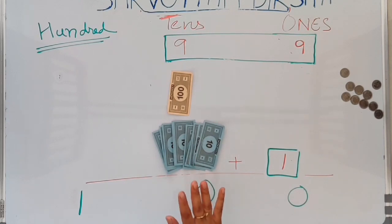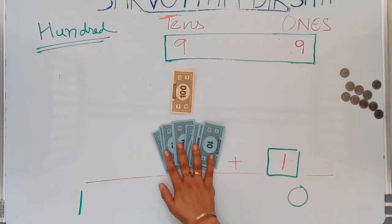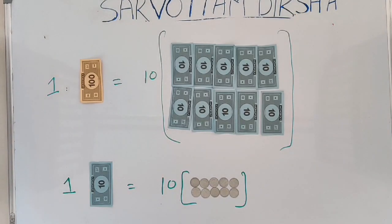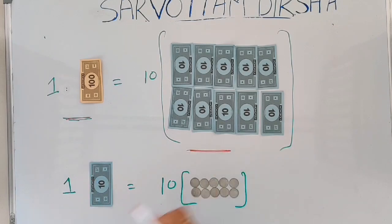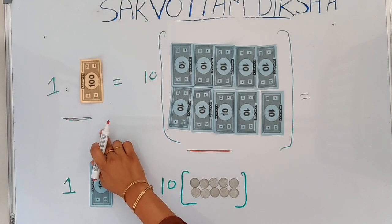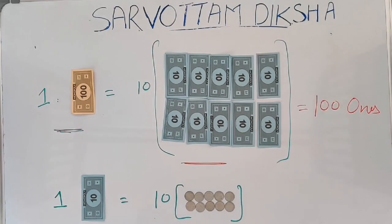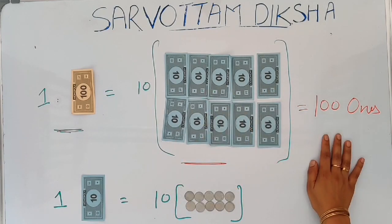If this one hundred-note somehow comes to the tens place, it has to be replaced with ten tens. So if it is lying at the tens place it is ten tens; if it is sent to the hundreds place it is one hundred. Therefore, one hundred is equal to ten tens, and one ten is equal to ten ones. So my 100 will be equal to how many ones? 100 ones — corresponding to every ten-note I have ten ones, and with ten tens in total, that gives 100 ones.